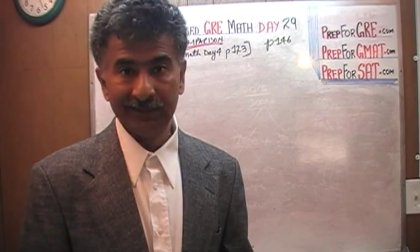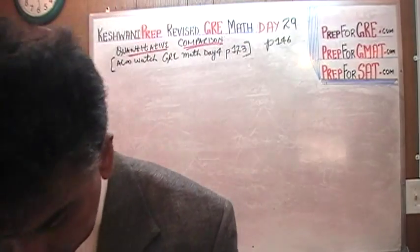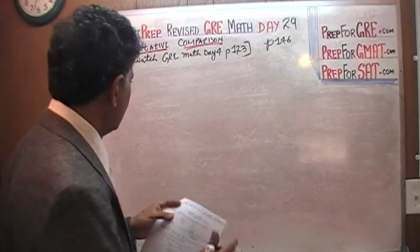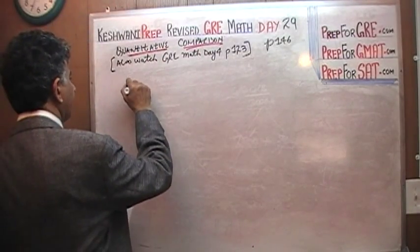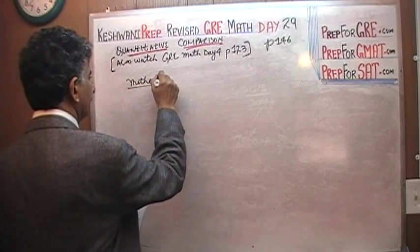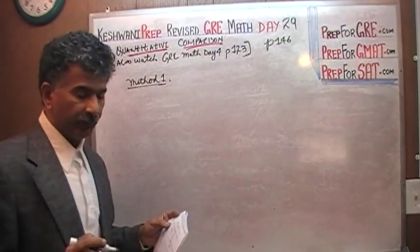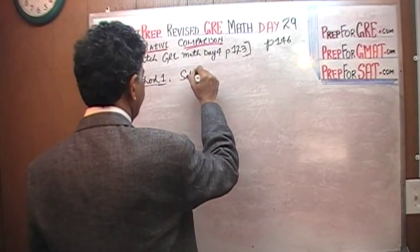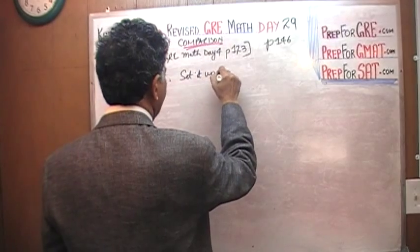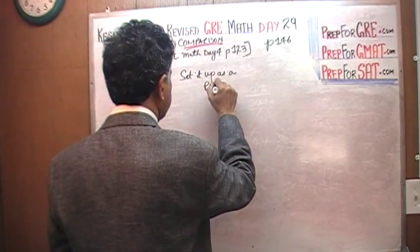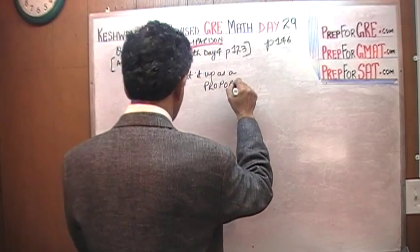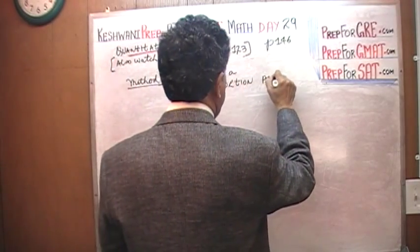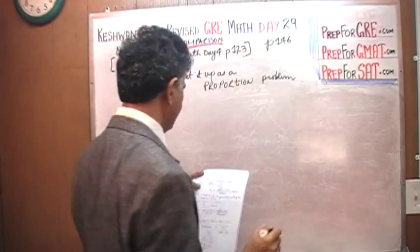As you saw yesterday, that is not how I would solve it. Anyway, here it is. So the problem is in front of you. Here is the first method. I am going to do it two different ways. We are going to set it up as a proportion problem.